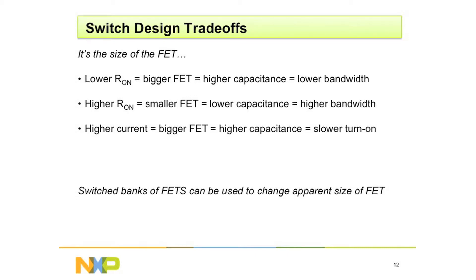And finally, if you want higher current, you need to put a very large FET on it, which gives higher capacitance but a slower turn-on time. So it's always a trade-off — you can't have the best of everything, so you need to pick the switch based on the needs that you have. There is not a one-size-fits-all.